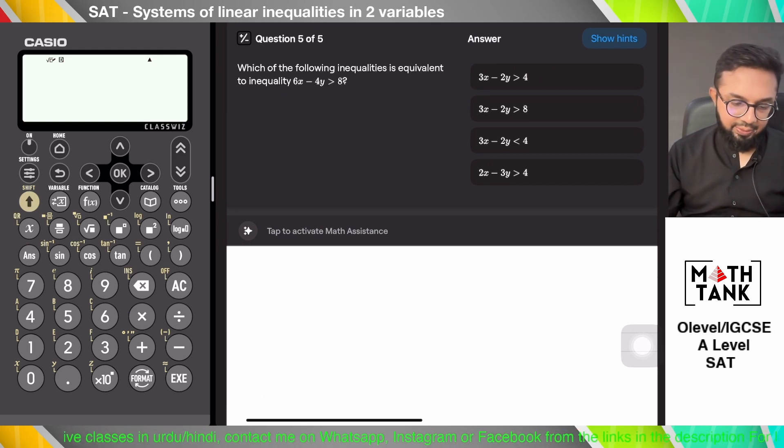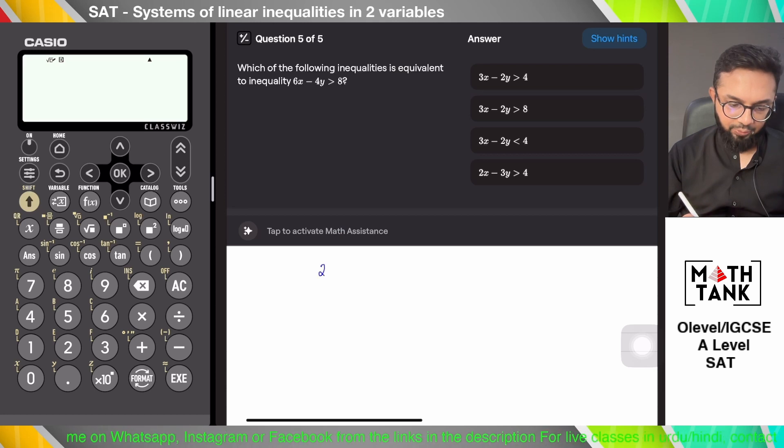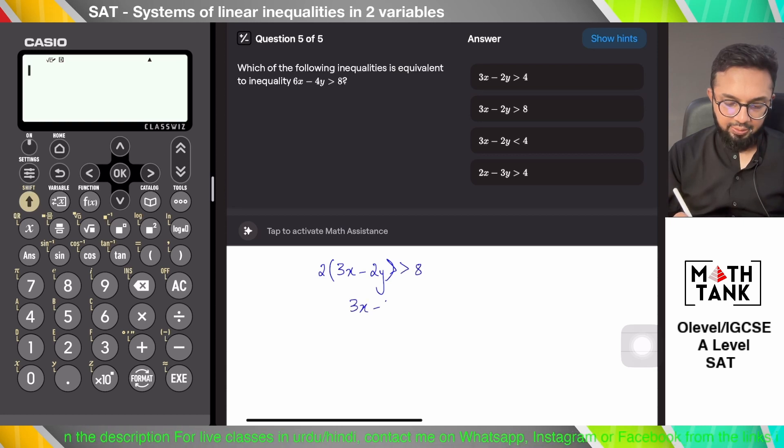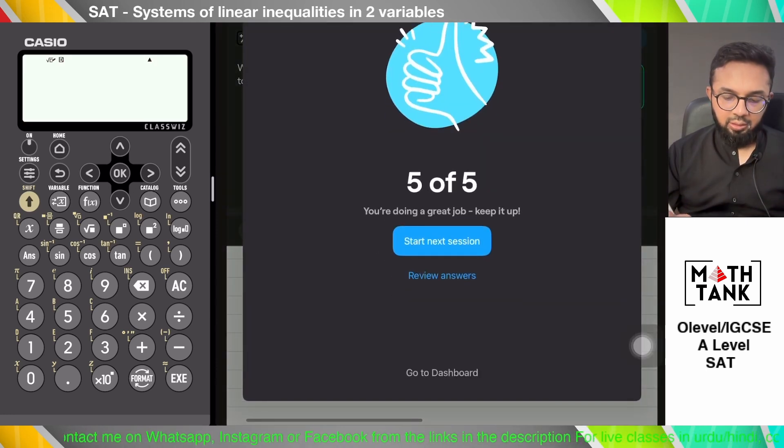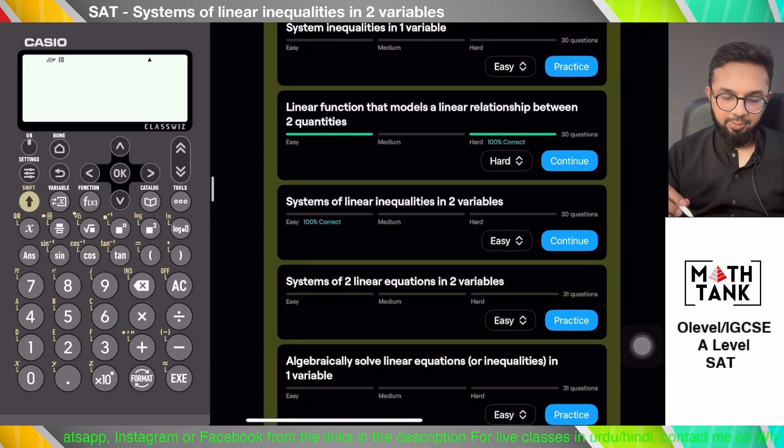Which of the following inequalities is equivalent to inequality 6x minus 4y? Again, I see 2 factored out. 3x minus 2y is greater than 4. Let's go to some more easy questions.